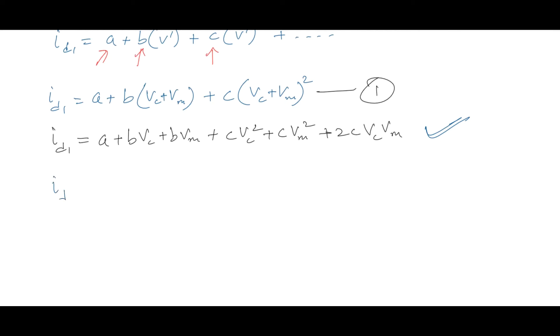In similar way we can write the equation for current for diode D2. It will be A plus B, this time in place of VC plus VM we will write VC minus VM, plus C(VC - VM)². Let us mark this equation number 2. Now further expanding this equation we will get A plus BVC minus BVM plus, expanding this square (A - B)², we get CVC² plus CVM² minus 2CVMVC. So that is the current we are getting at the output of diode D2.